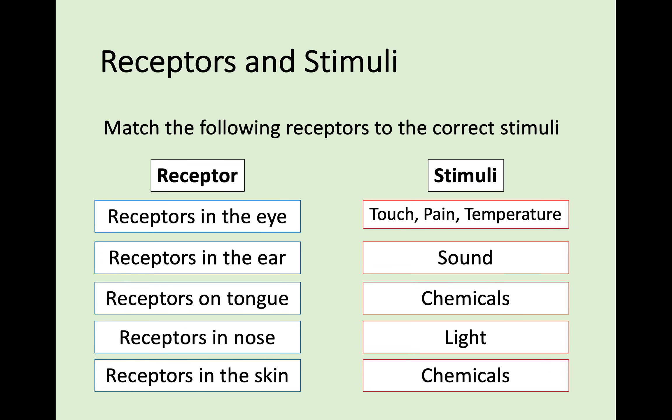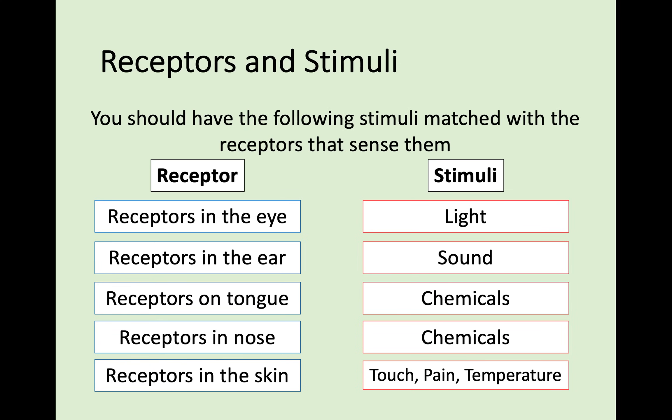Try and match which stimuli would match with which receptor. Your eye takes in light — that's how you see — so the receptors in your eye are receptors for a light stimulus. Your ear has receptors that react to a sound stimulus, and receptors on your tongue and nose take in chemicals. All the different tastes and smells you have are caused by chemicals picked up by receptors on your tongue or in your nose. In the skin you have receptors responsible for touch stimulus, pain, or temperature.